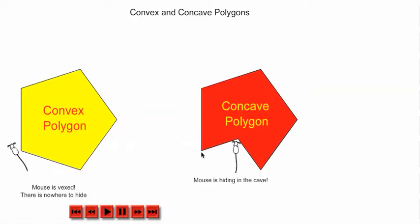These sides, if we extend this side, for example, it goes right through the interior. And this one too, right through the interior. So this is a concave polygon.